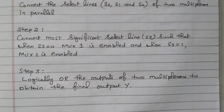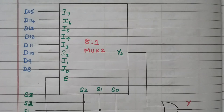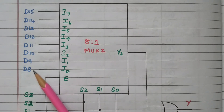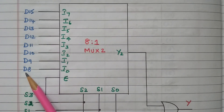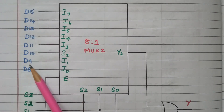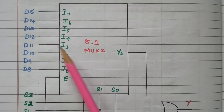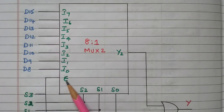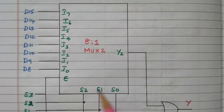Now we will go to the block and logic diagram. This is MUX2, the second 8-to-1 multiplexer, having the MSB data inputs from D8 to D15. We have 16 inputs total; 8 inputs from D8 to D15 are connected to MUX2. There is an enable line and 3 selection lines S2, S1, S0. Out of the 4 selection lines, 3 are connected here and one selection line is connected to the enable.